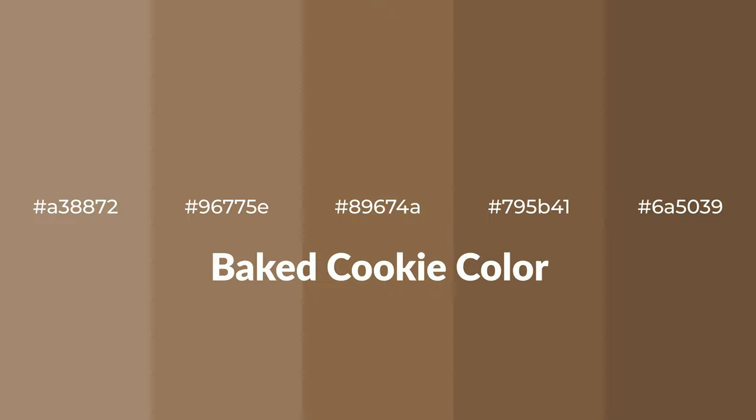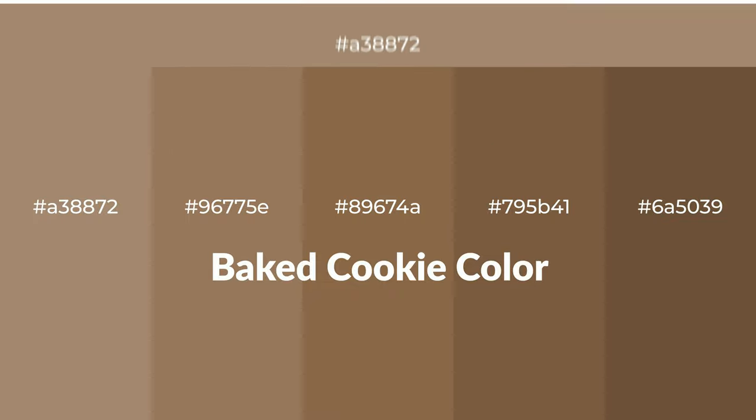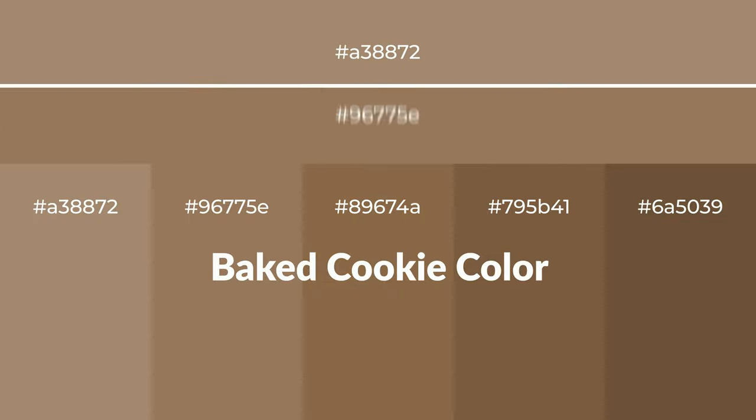Warm shades of baked cookie color with brown hue for your next project. To generate tints of a color, we add white to the color — tints create light and exquisite emotions. To generate shades of a color, we add black to the color, and it is used in patterns, 3D effects, and layers. Shades create depth and drama.